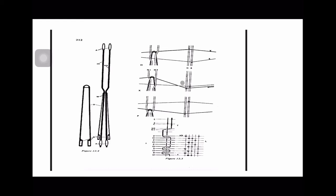Heel frame C remains in the bottom position during the crossed shed. In fact, heel frame C can be completely omitted, but it was found that without it the sawing action of the crossing end against the standard end was much more severe. So it is now common practice to use both heel frames C and S — S being compulsory to control the standard yarn. In diagram P, this is the plain shed where only the standard yarn is lifted and all elements controlling the crossing yarn are in the bottom position.